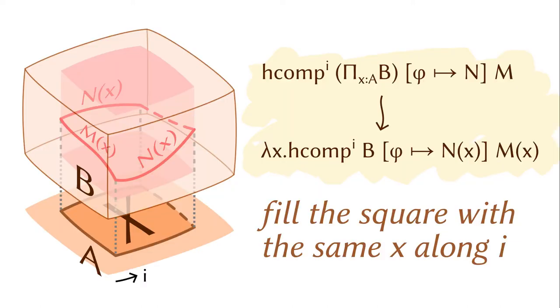Let's start with the homogeneous composition of functions. You have a box of functions, and you want to compose them to get a new function at i equals 1. By function extensionality, we should focus on its input-output behavior. Suppose the input is x at i equals 1, depicted as the dashed line on the ground. The first step is to consider the degenerate square on the ground that is essentially the line x. It's degenerate because it's constant in dimension i.